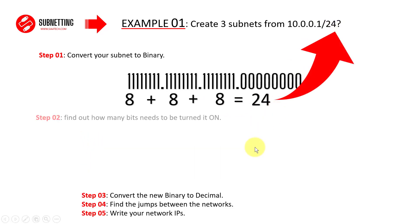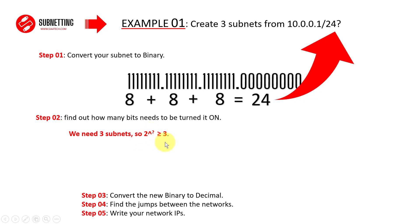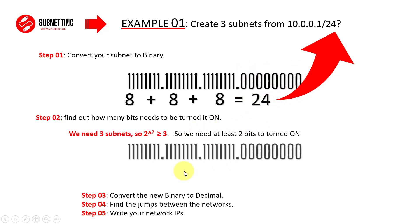Step two: find how many bits you need to turn on. The question asks to create three subnets, so we need 2^x to be equal to or greater than three. Two to the power of two equals four, which satisfies this. So we need two bits to be turned on from the subnet mask — specifically, two bits from the last octet.